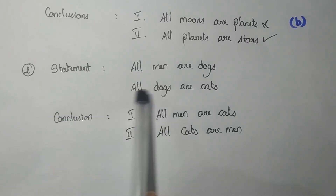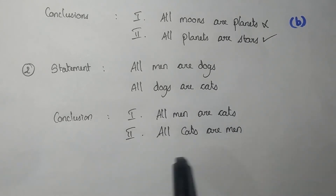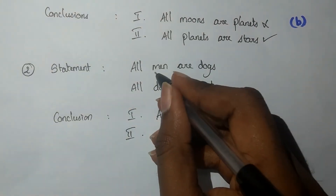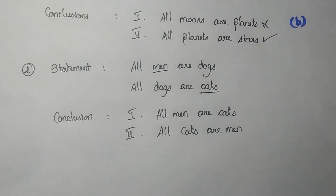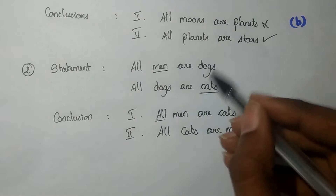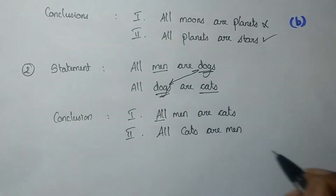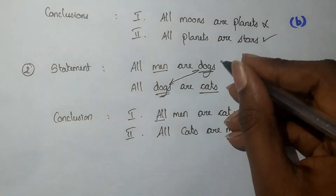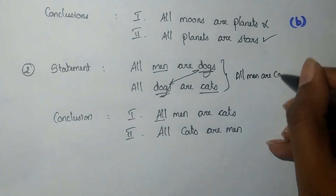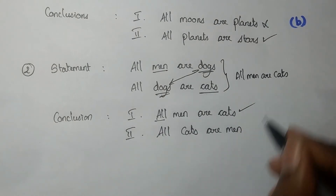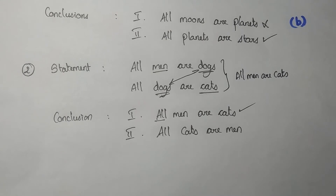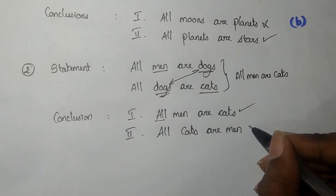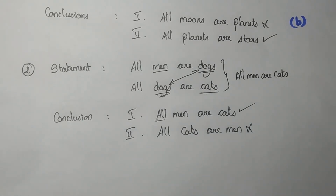Second example: All men are dogs. All dogs are cats. Conclusion 1: All men are cats. Conclusion 2: All cats are men. Using combination rule 1 — All plus All gives All — All men are cats is correct. For conclusion 2, 'All' cannot be reversed, so All cats are men does not follow. Only conclusion 1 follows, so the answer is option A.